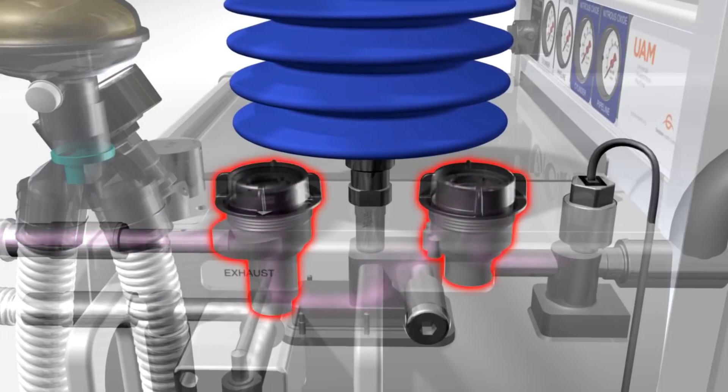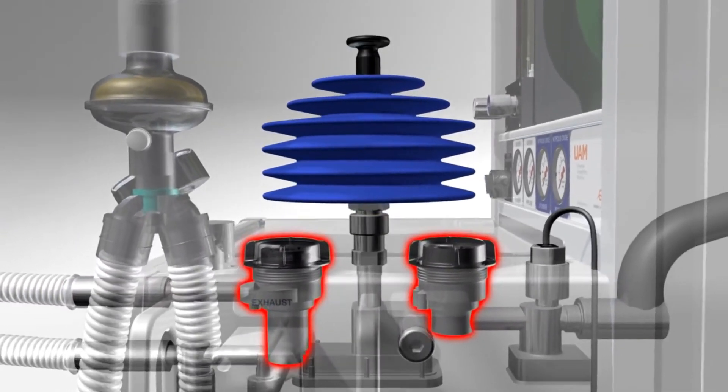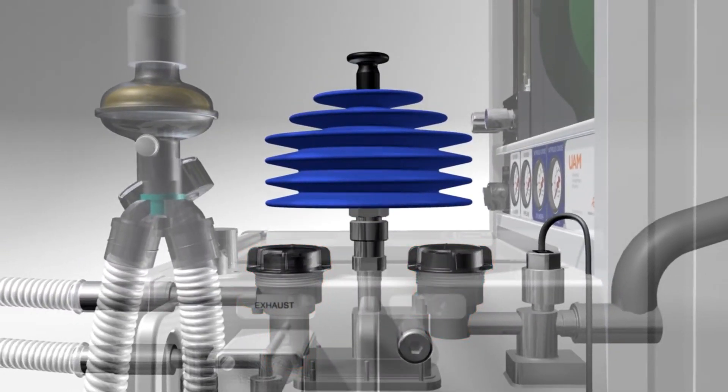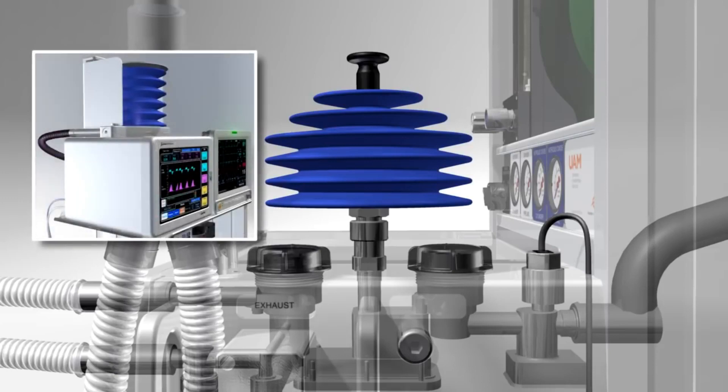Gas in the vaporizing chamber becomes fully saturated with volatile anesthetic vapor. This gas is then mixed with the gas in the bypass channel before leaving the vaporizer.